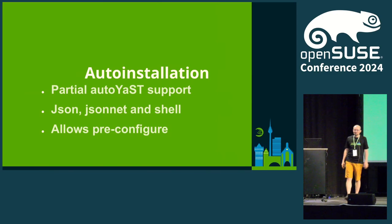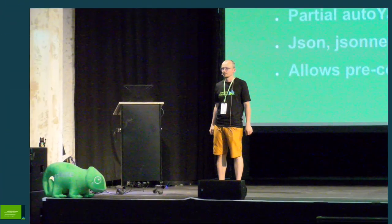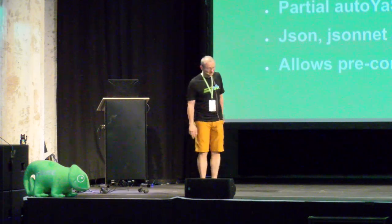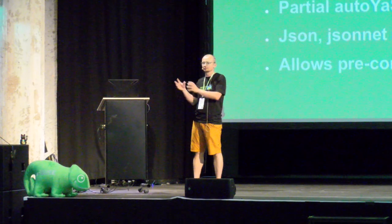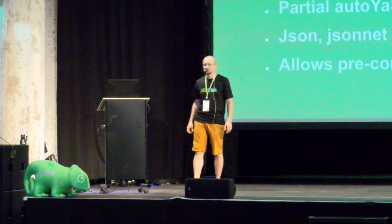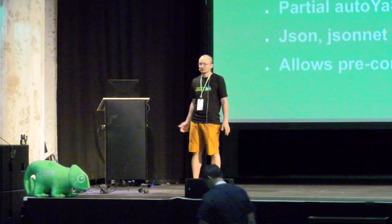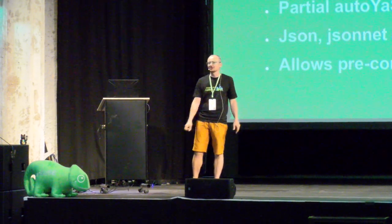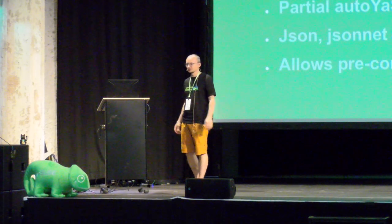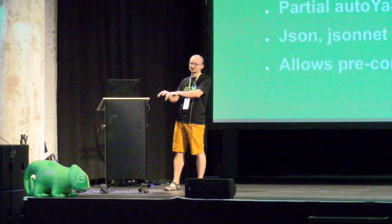An audience member asked about a migration tool from the previous AutoYaST format to JSON. The answer is: that's exactly what is done at the backend. There's a Ruby tool that takes the AutoYaST profile, does some processing, and the output is a JSON file loaded into Agama. Currently it's part of Agama but not available separately. The tool still uses the YaST code for processing AutoYaST profiles to ensure all various schemas are handled correctly, then translates to JSON for Agama.